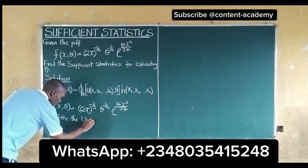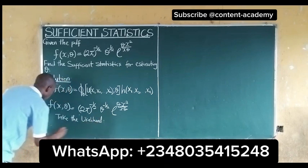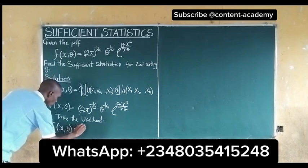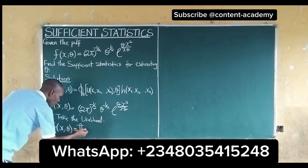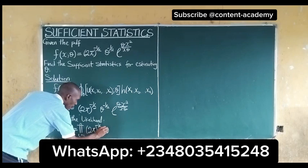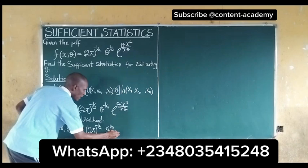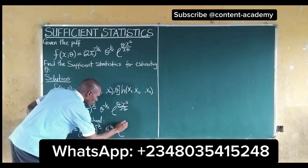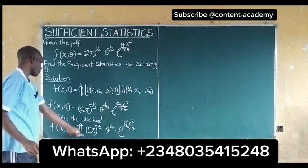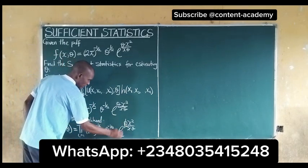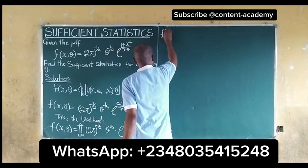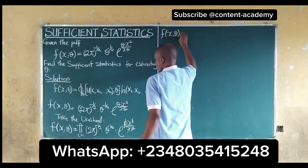So we take the likelihood. That means f(x, θ) is equal to the product sum of (2π)^(1/2) multiplied by θ^(1/2) multiplied by exp(θx² / xθ). This can be written out properly — the theta cancels with this, and the x cancels one term.